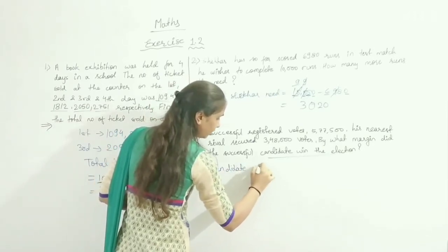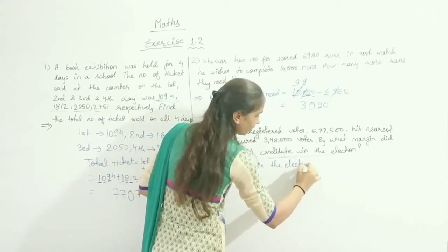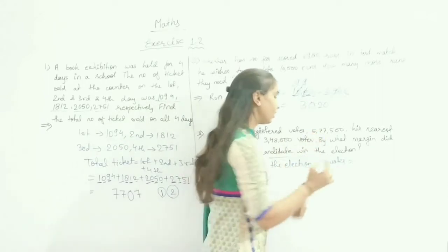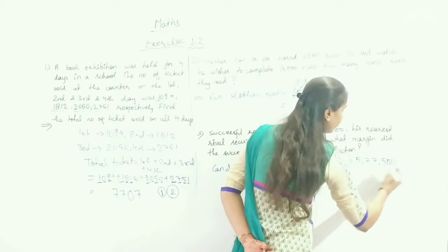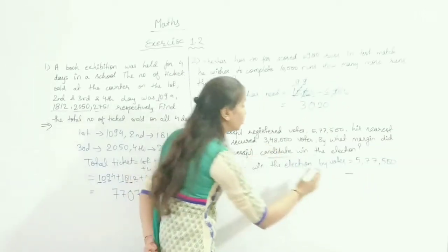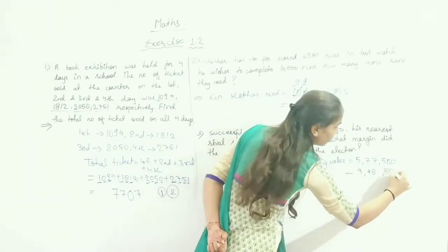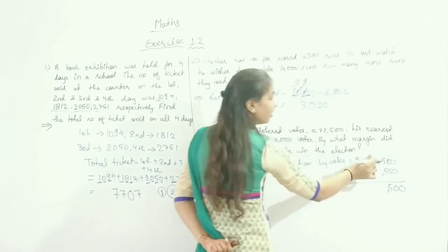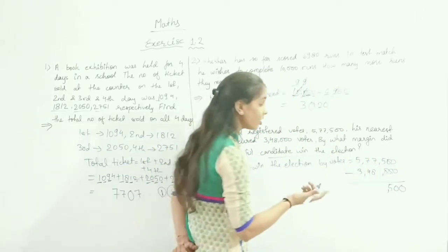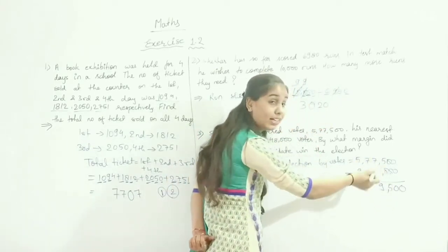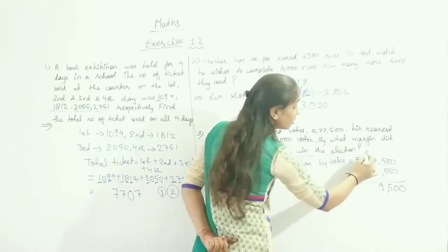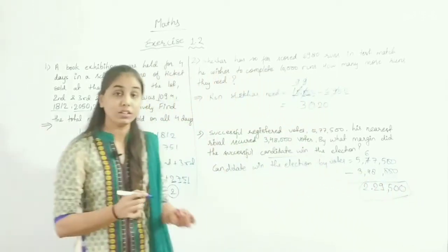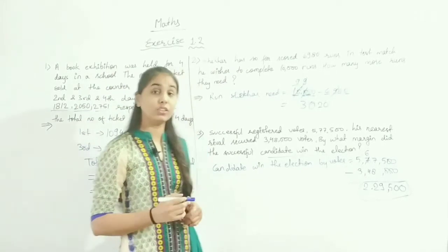Candidate wins by votes equals 5,77,500 minus 3,48,000. Working through the subtraction, the answer is 2,29,500 votes. Note it down in your notebook.